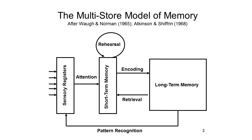Information moves among these structures by means of a set of control processes. At the earliest stage of memory processing is a set of sensory registers, one for each sensory modality, that hold a complete, veridical representation of sensory input — they hold all the information that's presented to them. The sensory registers draw on information held in long-term memory to recognize patterns of features. Some subset of the information held in the sensory registers is then transferred to a second store known as short-term memory, by virtue of a control process known as attention. By paying attention to some things as opposed to others, those things we pay attention to get transferred into short-term memory.